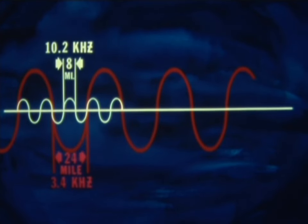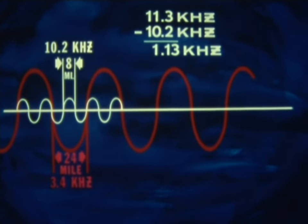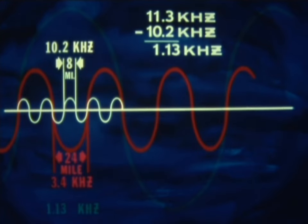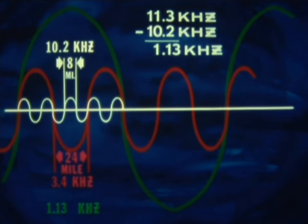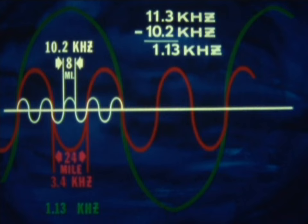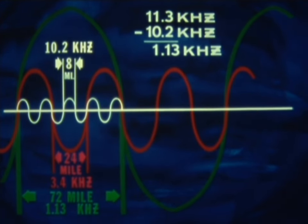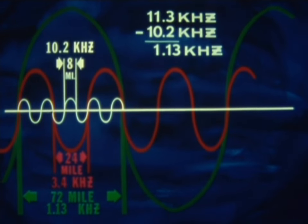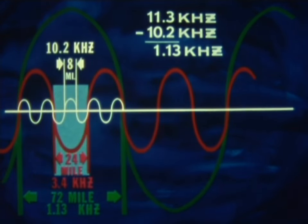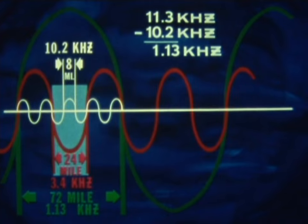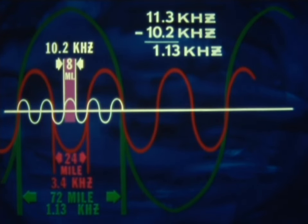Using the same procedure with the 11 and one-third kilohertz signal and the 10.2 kilohertz signal, we get a difference of 1.1 and one-third kilohertz with still wider lanes of 72 miles, which in turn give us a much larger margin for ambiguity. And using the same procedure, we can work our way down to a 24-mile lane and ultimately to an eight-mile lane.